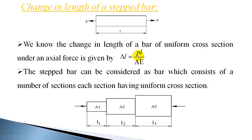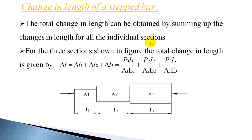With the load acting in each section — in this case it is all the same load — whatever load is acting, you can substitute it. The length of that section you can substitute, and the area of cross section: if it is the first section, you can substitute A1. For Young's modulus, it might be the same for all sections or it can be different. Whichever value is applicable for that section, you can substitute for Young's modulus.